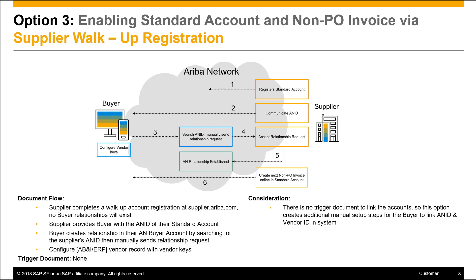Option three is the supplier walk-up registration process. The document flow is as follows: the supplier will complete a walk-up account registration at supplier.ariba.com. At this time, no buyer relationship will exist. The supplier will then provide the buyer with the ANID of their newly registered standard account.